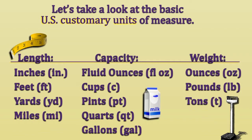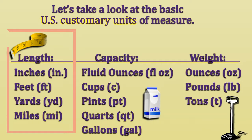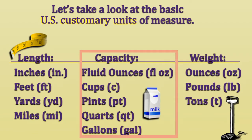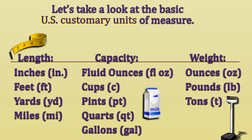When we look at customary units, the customary units for length are inches, feet, yards, and miles. The customary units of capacity are ounces, cups, pints, quarts, and gallons. The customary units for weight are ounces, pounds, and tons.